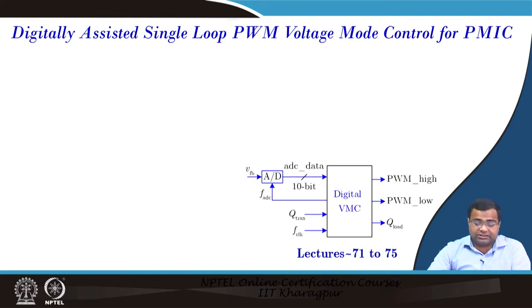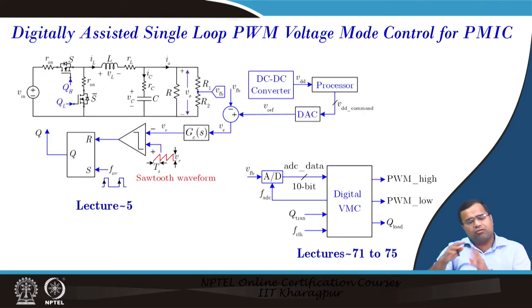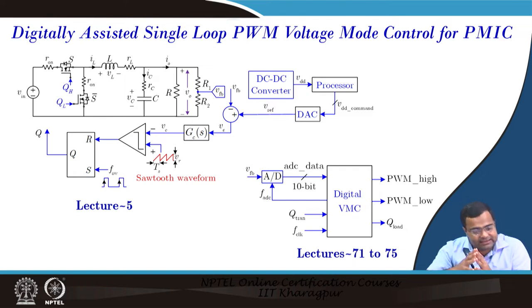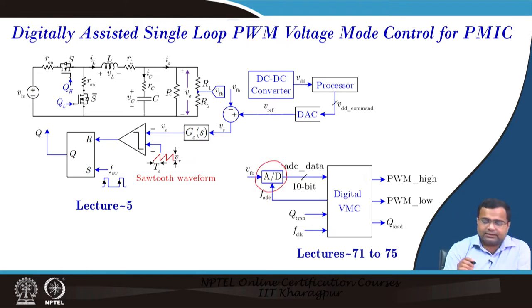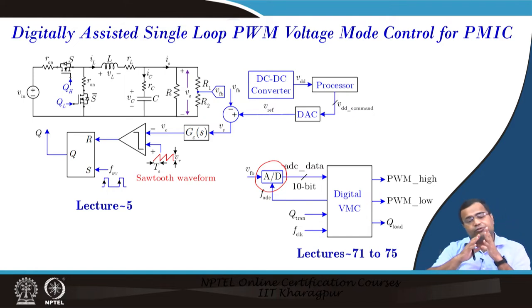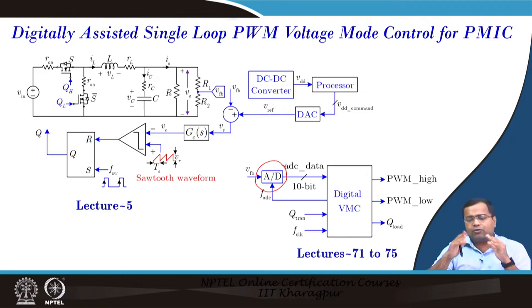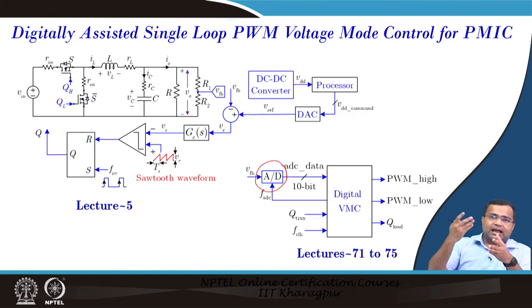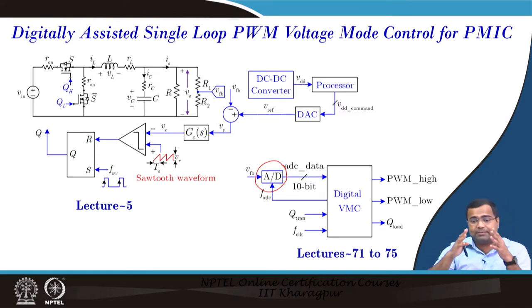Starting with digital voltage mode control, as discussed in lectures 71 to 75 — how can we make a high-frequency digital voltage mode control power management IC where we cannot afford an ADC? An ADC can be expensive, power-hungry, and increase silicon area. For example, in wireless sensor network power management, the supply voltage should be higher when sending data and reduced during idle mode to save dynamic power.